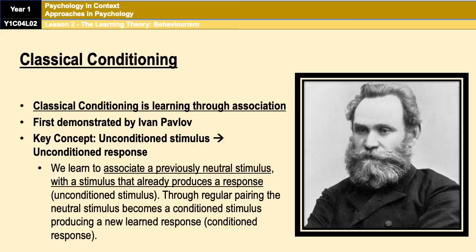Classical conditioning occurs when we learn to associate a previously neutral stimulus with a stimulus that already produces a response — an unconditioned stimulus. Then, through regular pairing, the neutral stimulus becomes a conditioned stimulus, which then produces a new learned response called a conditioned response. That's a nice two-mark answer that quickly describes what classical conditioning is.